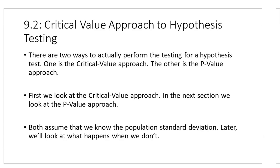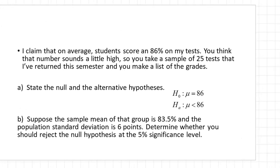Both critical value and p-value, the first time around, are going to deal with population standard deviations, assuming you know them. The second round will deal with what happens if you don't know the population standard deviation. Spoiler alert: it involves T-scores instead of Z-scores, and that's about it.